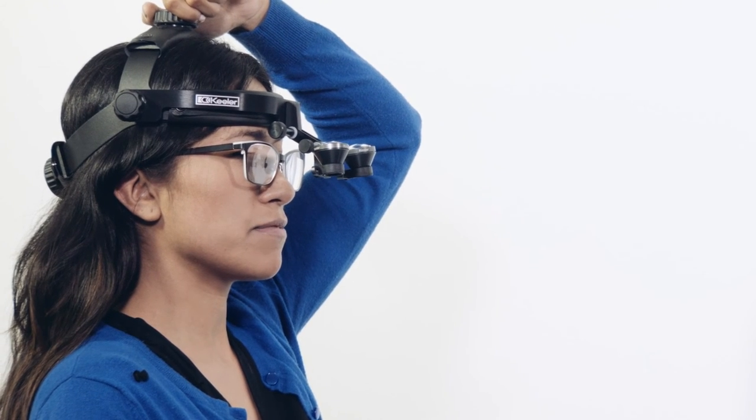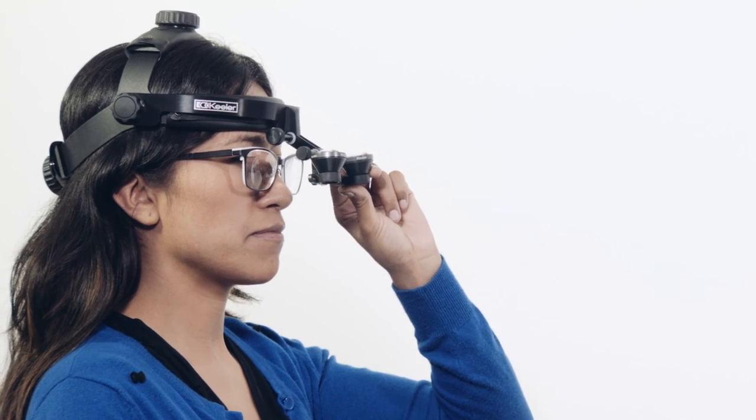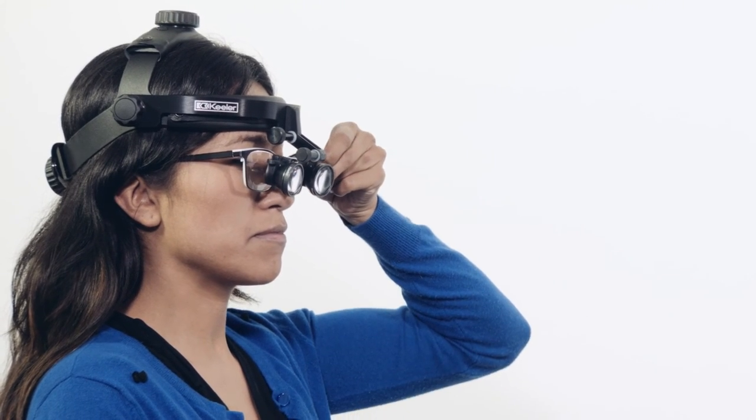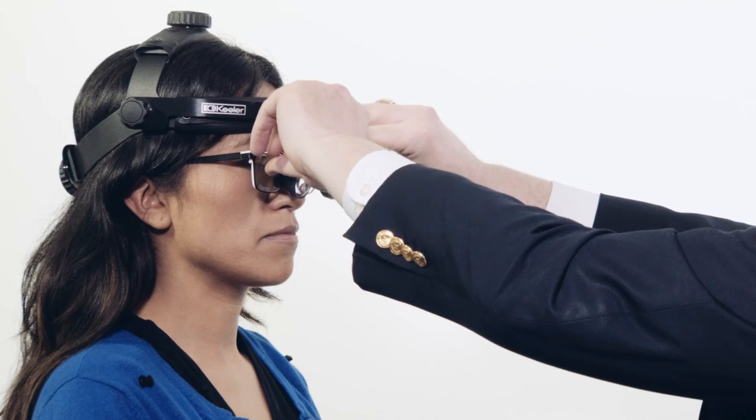If you have Keeler loops fitted to a headband, position the telescopes in approximately the correct position in front of your eyes. Loosen both adjustment knobs and vertically align each telescope.